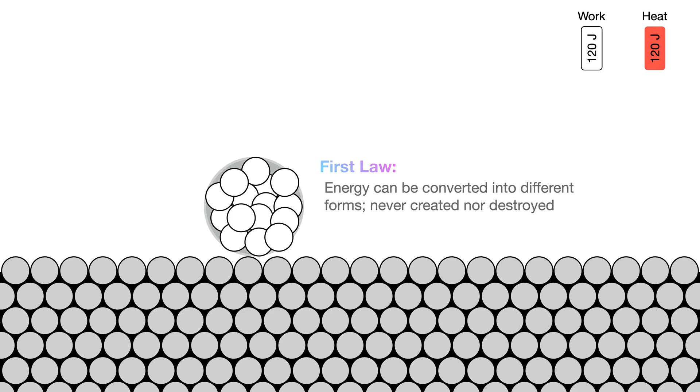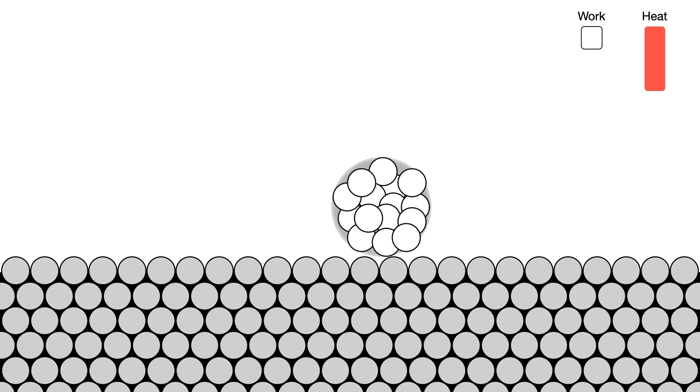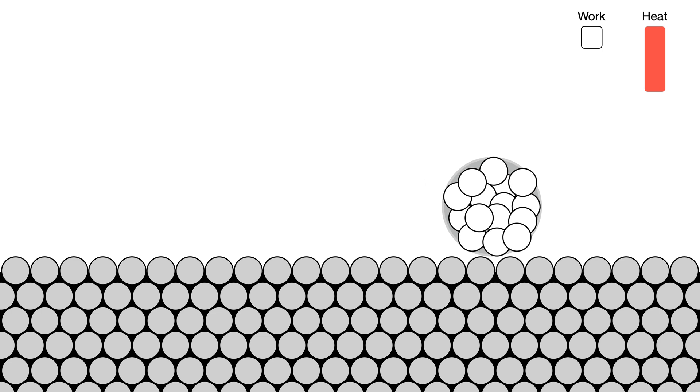However, after the conversion, there is still enough juice in the ball, so it keeps bouncing, and each time it bounces, it converts its energy into heat, until there's nothing left and it can't bounce anymore.